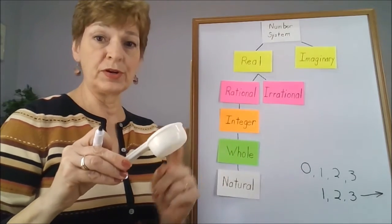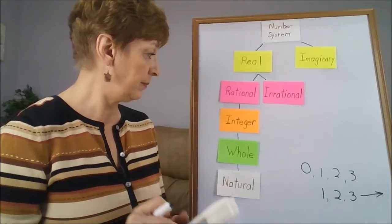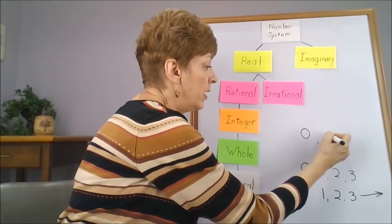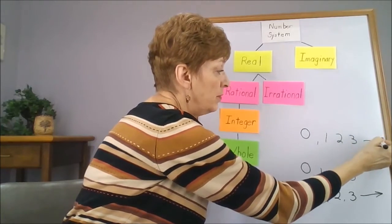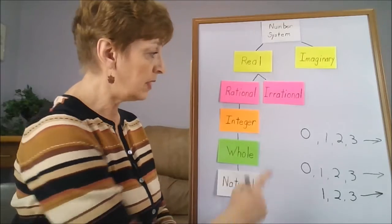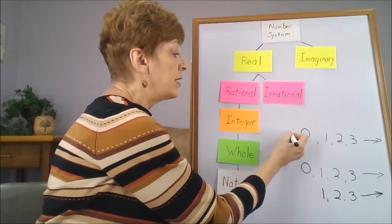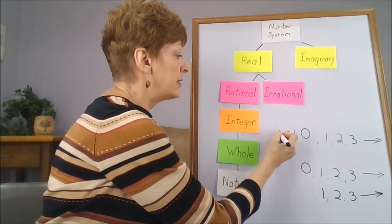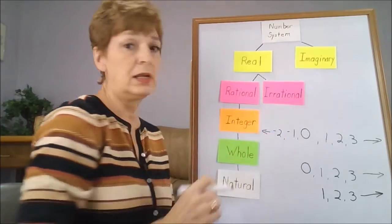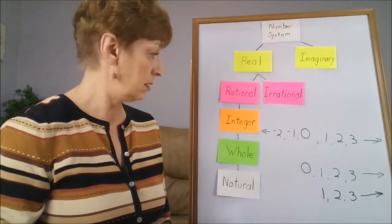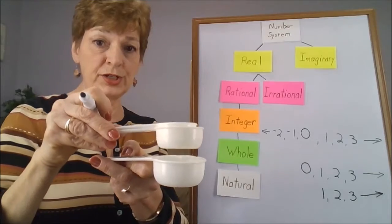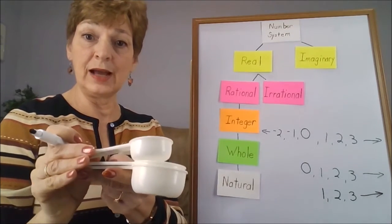The integers keep the 0 and the 1, 2, 3, and so forth to infinity. These go on and on forever, but we're adding to this category our negative numbers, so negative 1 is in there, negative 2, and so forth to infinity in the negative direction. So these cups then would fit into another slightly larger.